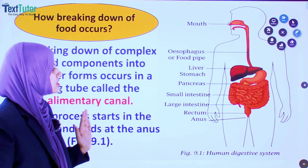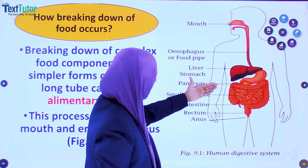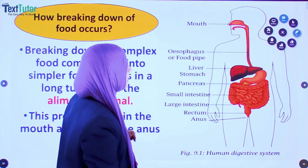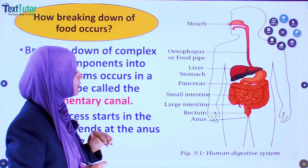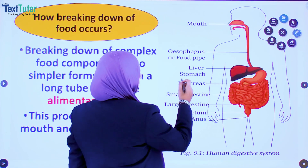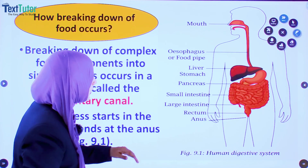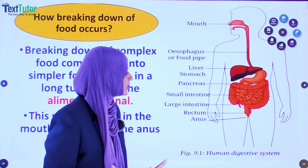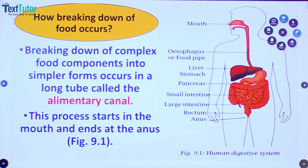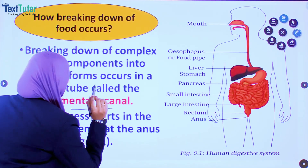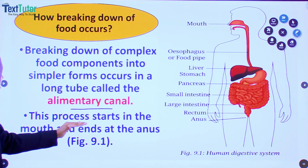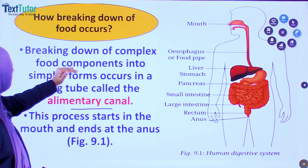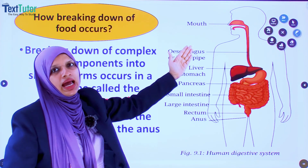See this diagram. This is the human digestive system. It starts from the mouth and ends with the anus. We eat through our mouth and release waste material through the anus. In between, the esophagus or food pipe, liver, stomach, pancreas, small intestine, large intestine, rectum, and finally the anus are included. Breaking down of complex food components into simpler forms occurs in a long tube called the alimentary canal. This process starts in the mouth and ends at the anus.